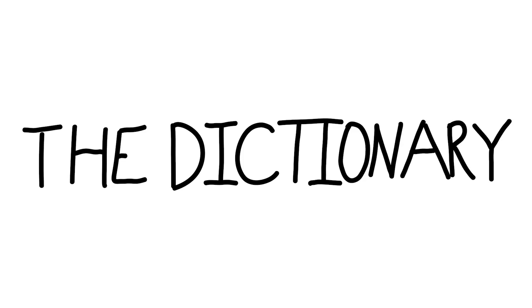We are on our last word of the episode — it is the first form of baby, B-A-B-Y. This is a noun from the 14th century. 1A1: an extremely young child, especially the synonym infant. 1A2: an extremely young animal. 1B: the youngest of a group. 2A: one that is like a baby, as in behavior. 2B: something that is one's special responsibility, achievement, or interest.